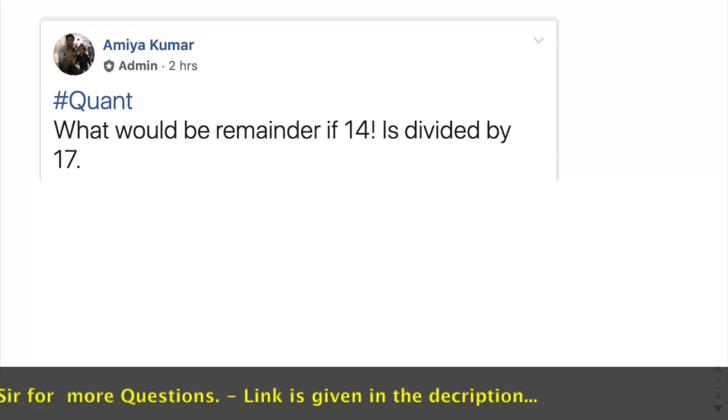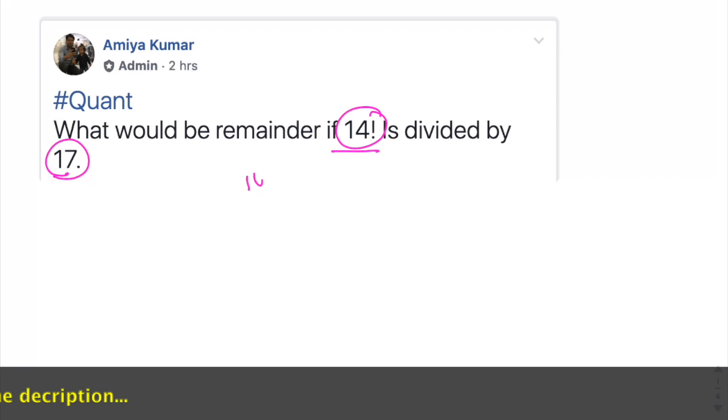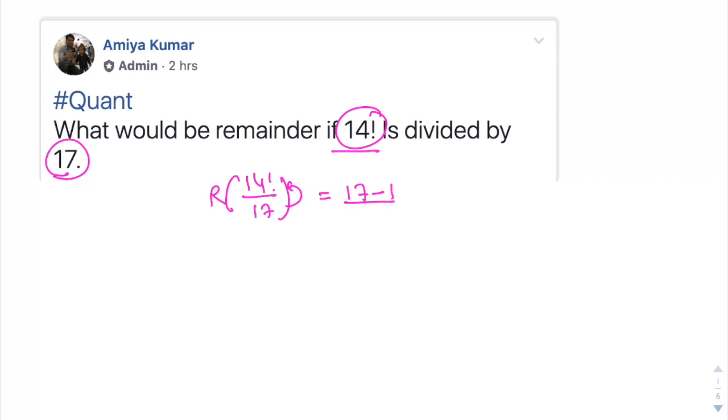Question number one: we need to find the remainder of 14 factorial divided by 17. This is Wilson's theorem. If we have a gap of three in the prime numbers, then Wilson states that the remainder is 17 minus 1 divided by 2, which is nothing but 8. So 8 is the answer of this remainder.